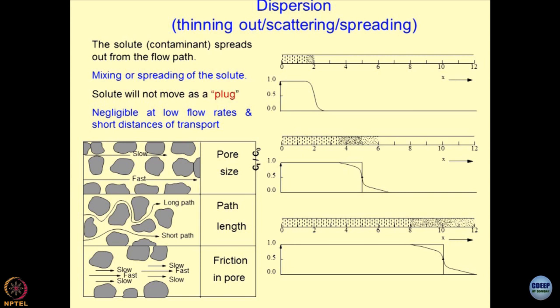Here you have a plug of certain concentration. Because of the flow of water, the concentration over a distance gets spread out — the concentration is dropping down. This is the concentration profile: at one end you have higher concentration, at the other end you have low concentration on the x-axis. So Ct/C0 at one point is 1, at the other point is 0 — the step gradient.